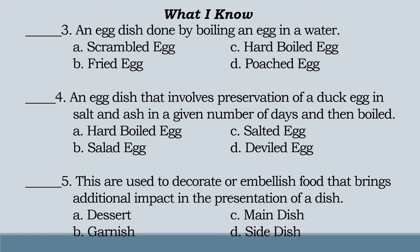Number three: an egg dish done by boiling an egg in hot water. Letter A: Scrambled egg. Letter B: Fried egg. Letter C: Hard boiled egg. Letter D: Poached egg.